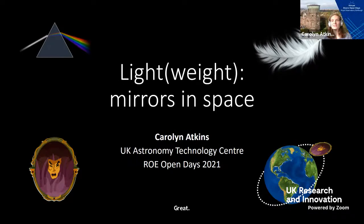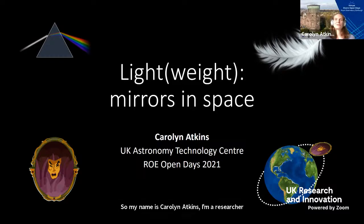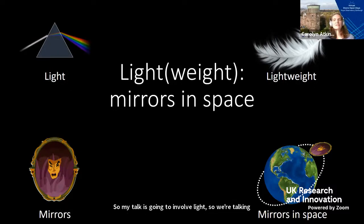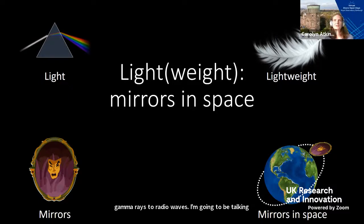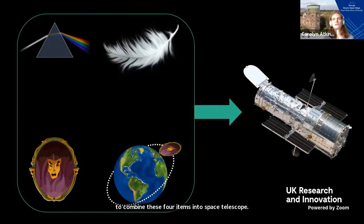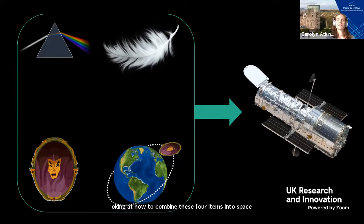Hello everybody, thank you for staying for the very last talk of this afternoon. My name is Carolyn Atkins, I'm a researcher here at UK ATC. Today I'm going to be talking about lightweight mirrors in space. My talk is going to involve light — the electromagnetic spectrum from gamma rays to radio waves — things that are lightweight with low mass, mirrors, and putting mirrors in space. I'm going to look at how to combine these four items into space telescopes, and hopefully by the end you'll understand why the majority of space telescopes have light-weighted mirrors and how that links into my own research.